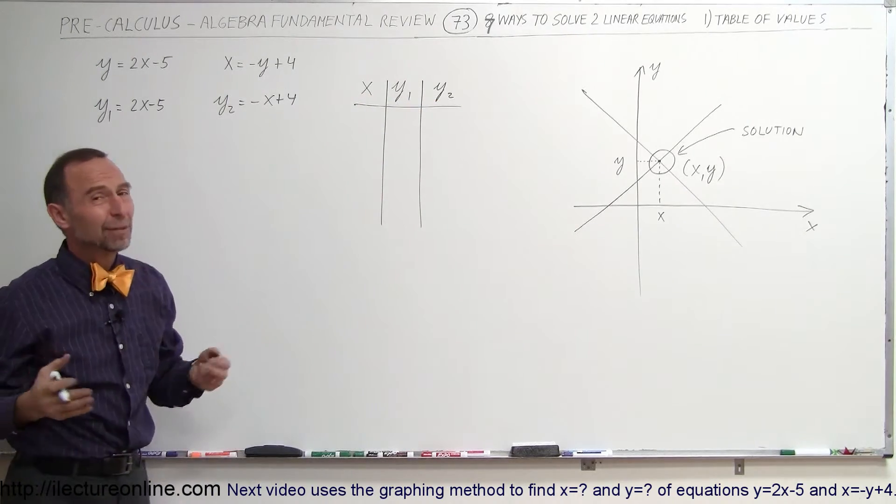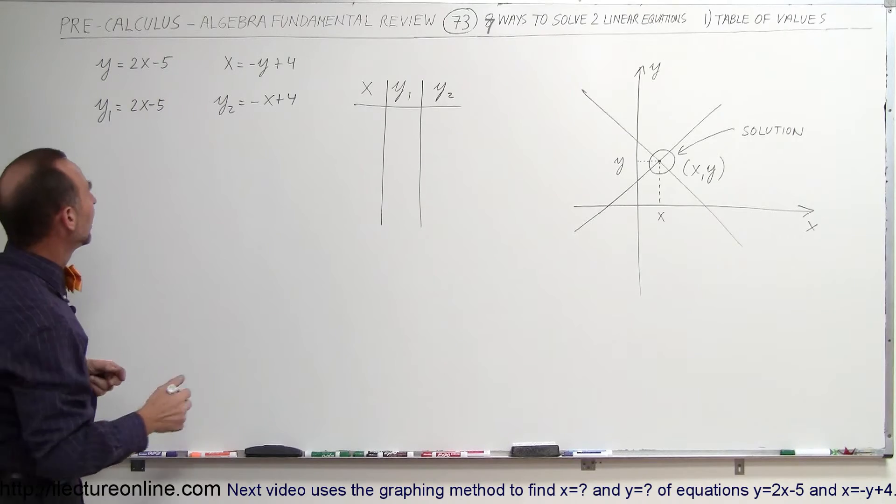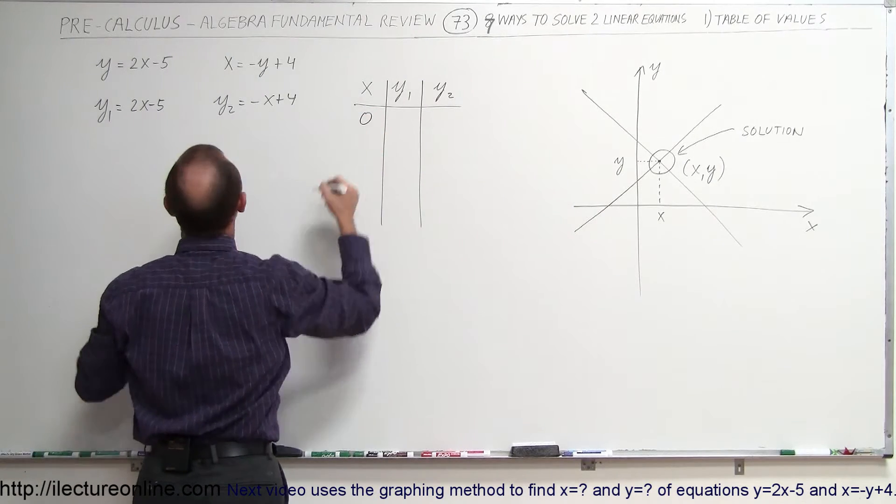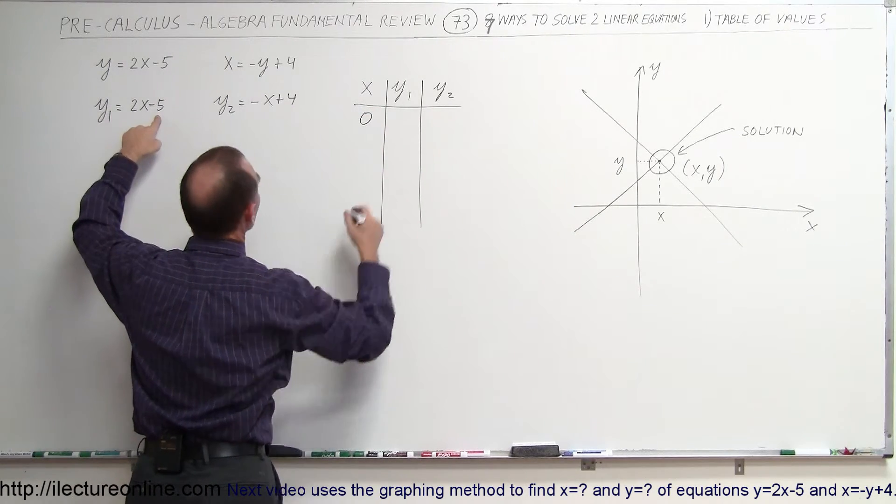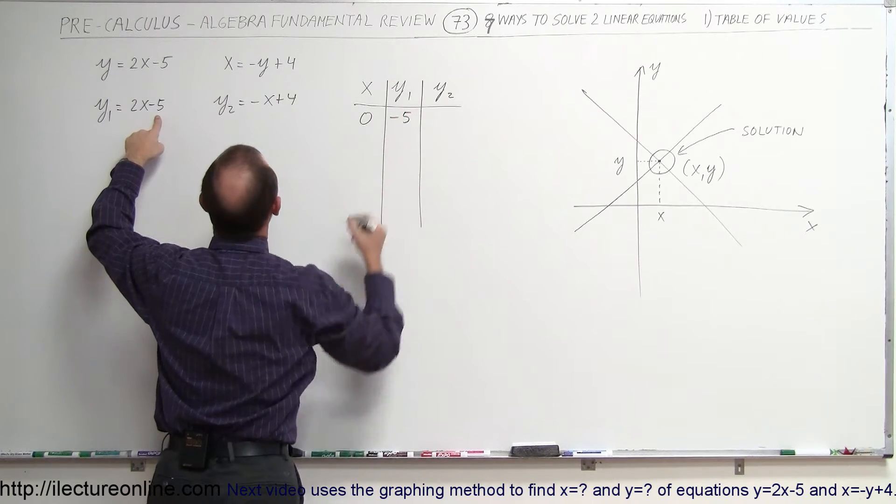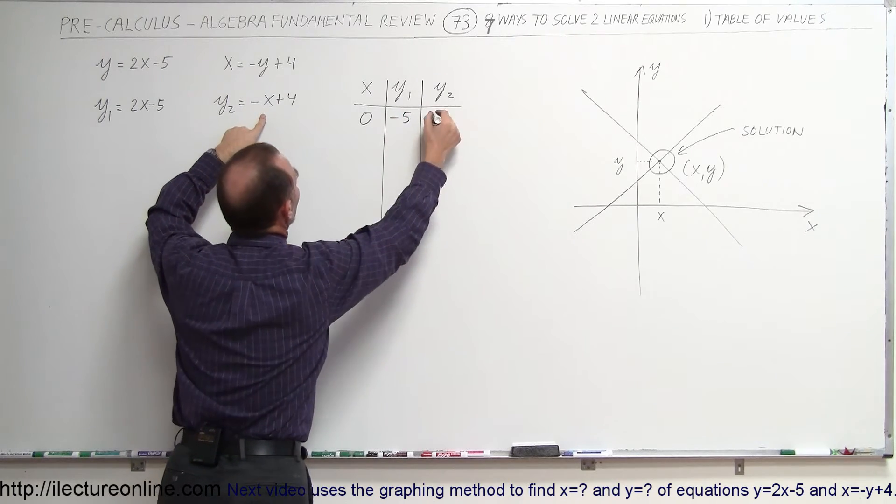All right, so what would be the first value? I always like to start with 0. If x is equal to 0, what does y1 become? And you can see y1 becomes minus 5, and y2 becomes plus 4.